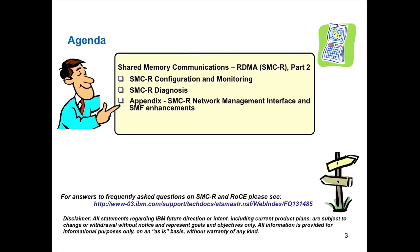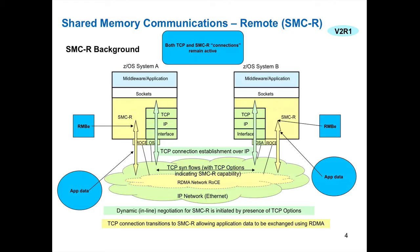Starting with a picture — that's the easiest way to indicate what we're doing. This picture shows an SMC connection. An SMC connection for us is a hybrid between a TCP connection and an SMC connection over the RoCE network. We establish the TCP connection first, just like any other TCP connection, exchanging a new option that indicates our interest in using SMC for this TCP connection, so that all flows over the TCP network. After that exchange completes, that's our normal three-way TCP establishment handshake.